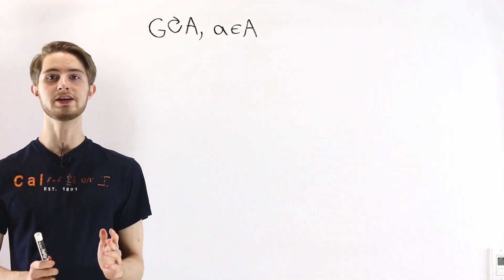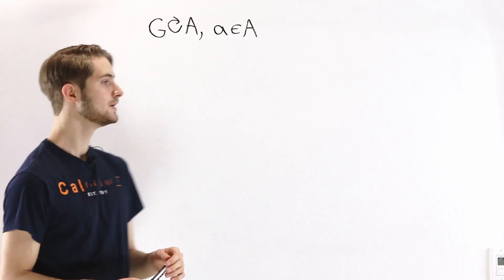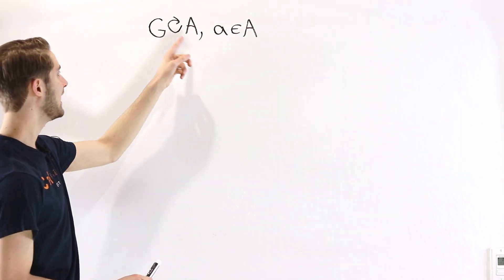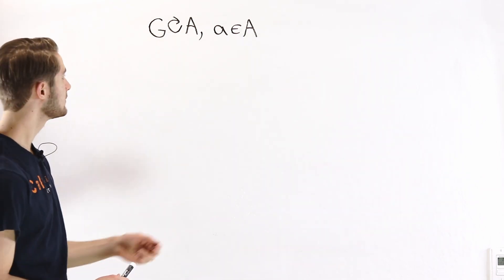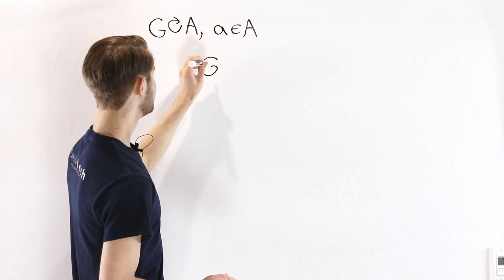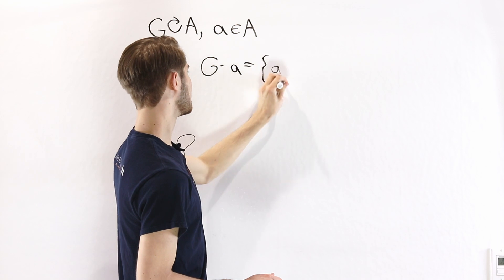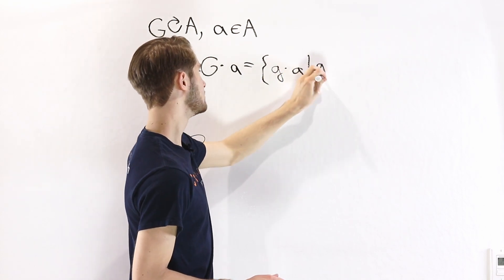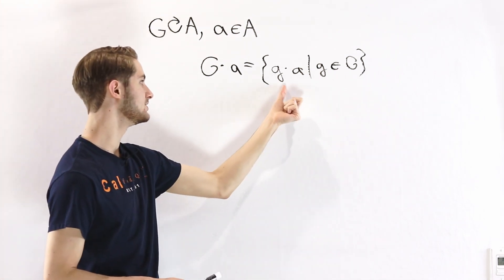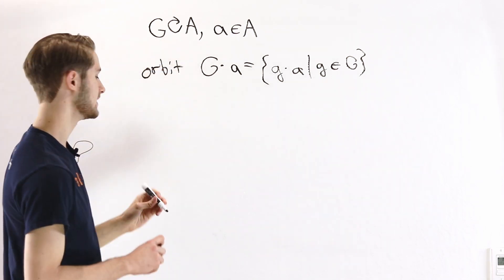We are going to talk about the Orbit Stabilizer Theorem, which shows a very important property of group actions. Suppose we have some group G, some set A, and a group action where G acts on A. If we pick a specific element of that set, we can consider the set G times A, referring to the set of elements of the form G times A where G is an element of the group. This is called the Orbit of the element A.